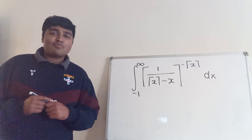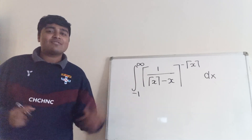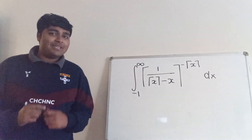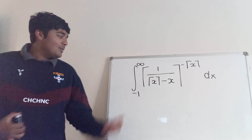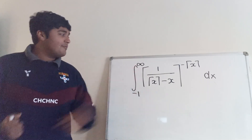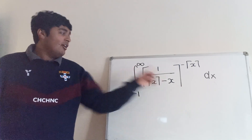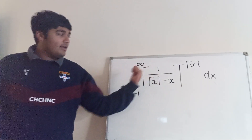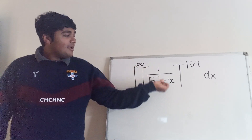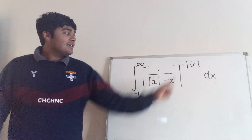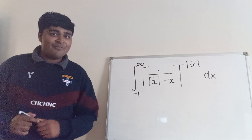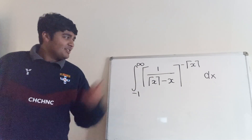Hi, thanks for joining me. Today I've got a problem which was adapted from an MIT integration B problem. We have the integral from minus 1 to infinity of the ceiling of 1 over the ceiling of x minus x, all raised to the power of minus the ceiling of x.